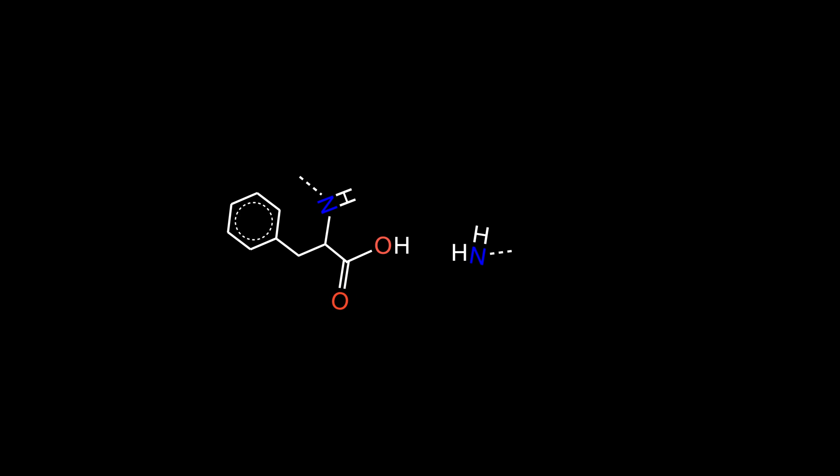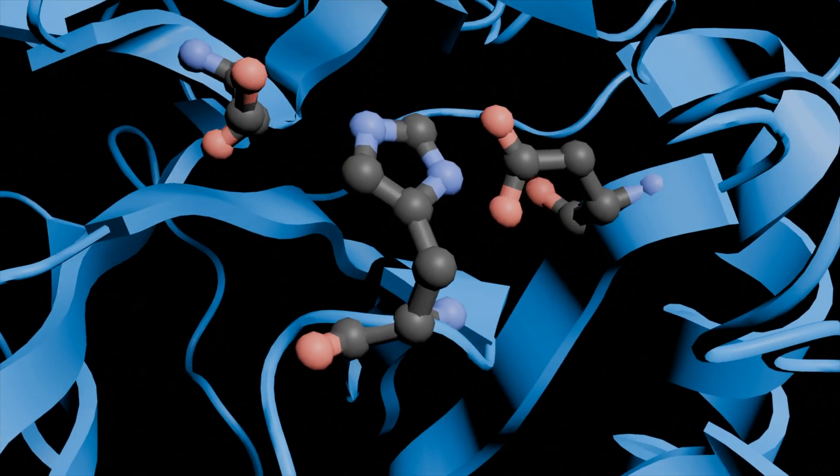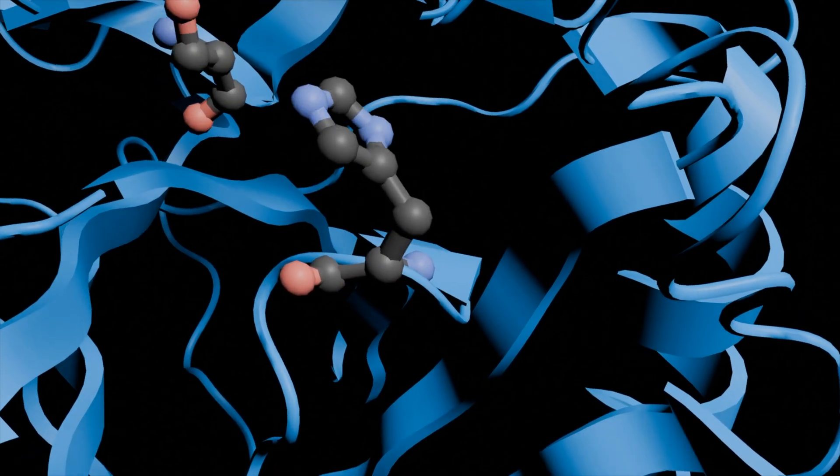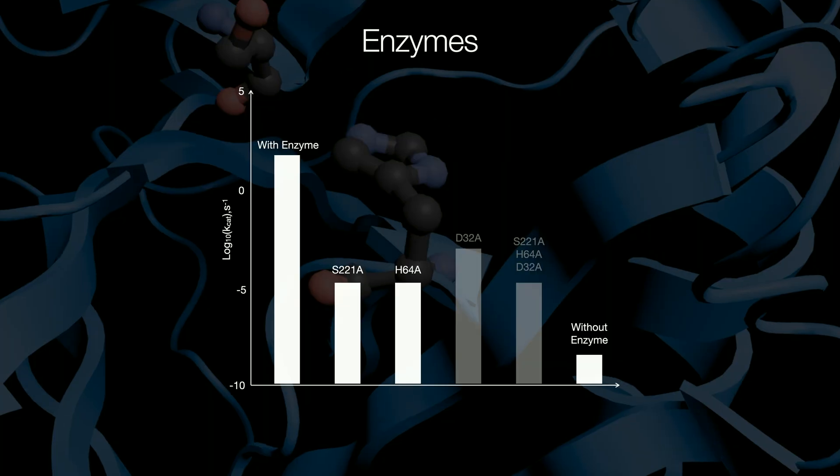The last of the trio, aspartate, is positioned such that it's hydrogen bonding with the histidine, so it can line up with serine. If it isn't there, the histidine would flop about and drop the speed by a hundred thousand times.